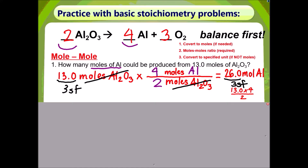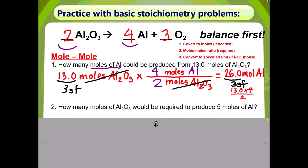Lastly, you must remember to check sig figs. The given, 13.0, has 3 sig figs. Therefore the answer has to have 3 sig figs. Now take a minute, pause the video, and try this next problem on your own.